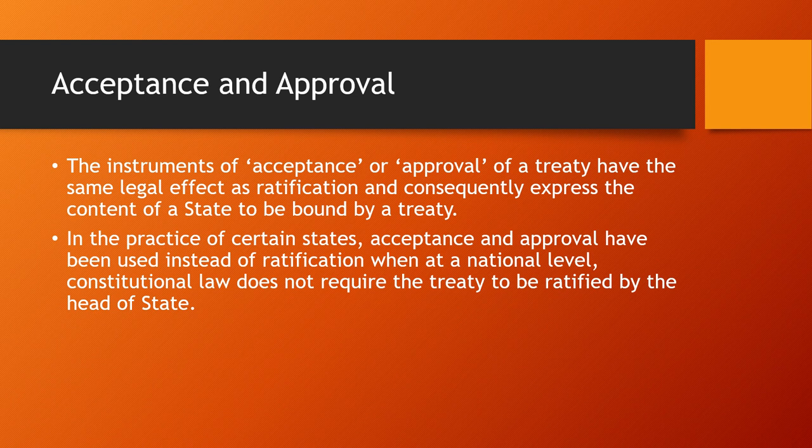The instruments of acceptance or approval of a treaty have the same legal effect as ratification. When a convention or resolution is introduced, it is first adopted and then ratified. Acceptance or approval is when states provide their agreement so that the convention or resolution can move from the stage of adoption to ratification. In practice, acceptance and approval are used instead of ratification at a national level, when constitutional law does not require the treaty to be ratified by the head of state.